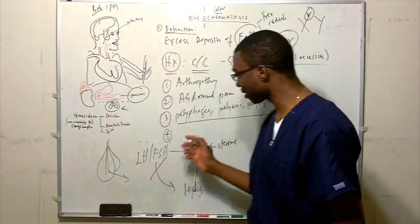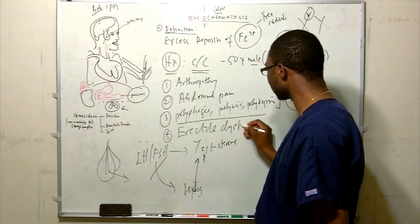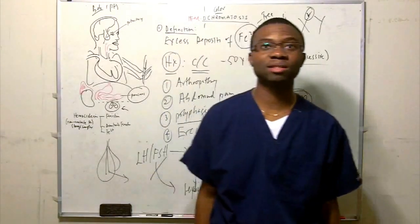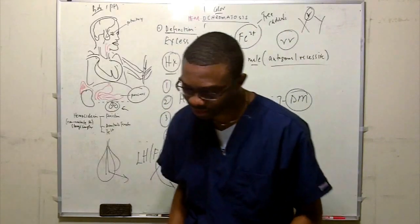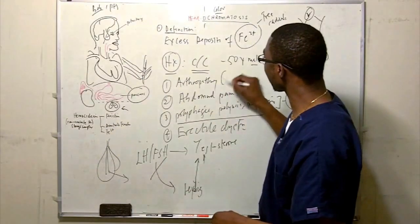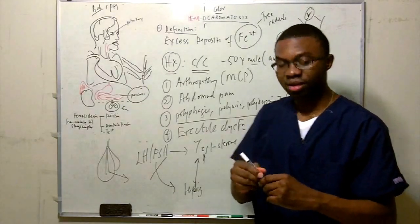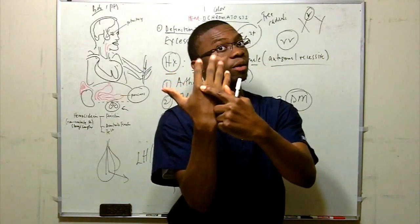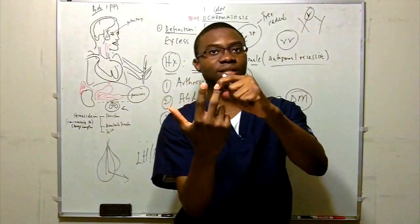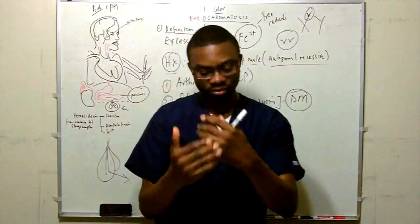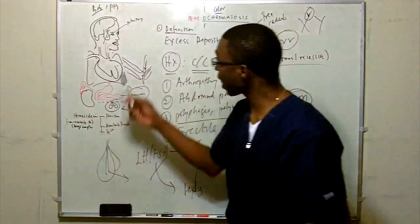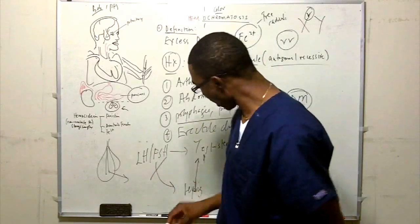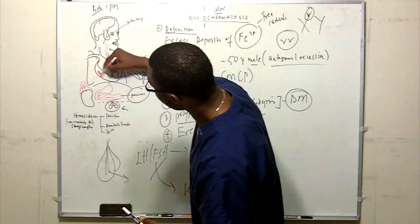The arthropathy specifically deposits in the MCP — metacarpophalangeal — joint, causing pain there. That's where you're going to see a lot of pain, along with the PIP and DIP joints. Then this iron is also going to go to the heart. When it deposits in the heart, what do you think happens?